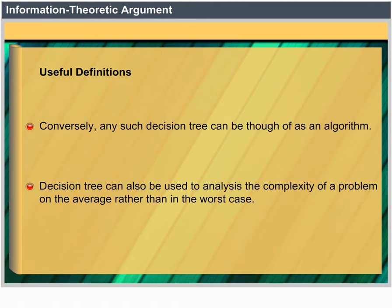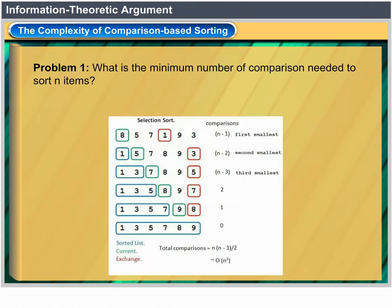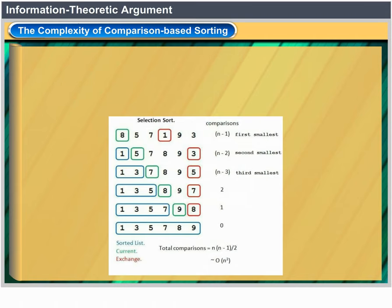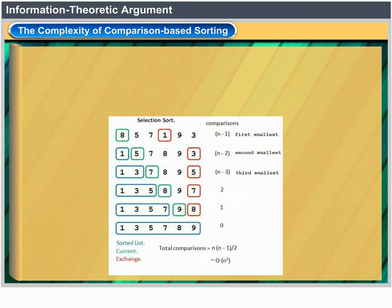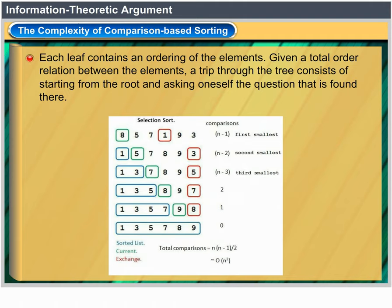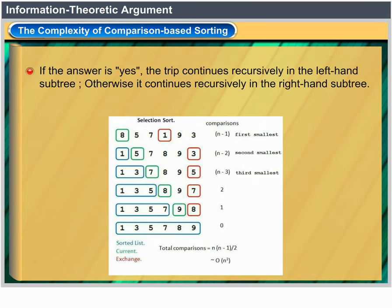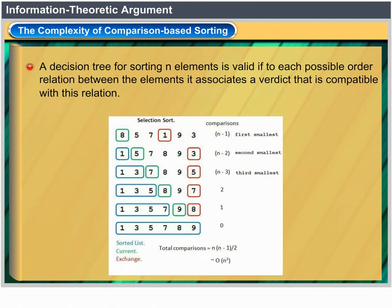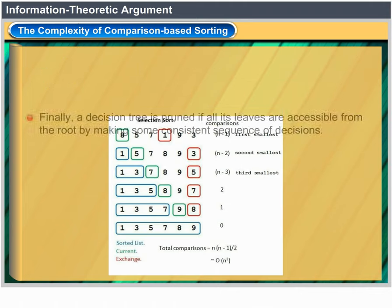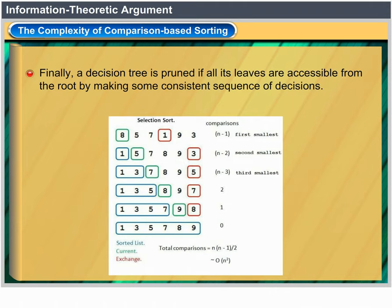Decision trees can also be used to analyze the complexity of a problem on the average rather than in the worst case. The complexity of comparison-based sorting: what is the minimum number of comparisons needed to sort n items? A decision tree is a labeled directed binary tree where each internal node contains a comparison between two elements to be sorted and each leaf contains an ordering of the elements. A trip through the tree starts from the root; if the answer is yes, it continues in the left subtree, otherwise in the right subtree, ending at a leaf containing the verdict. A decision tree for sorting n elements is valid if to each possible order relation it associates a compatible verdict. A decision tree is pruned if all its leaves are accessible from the root by making some consistent sequence of decisions.